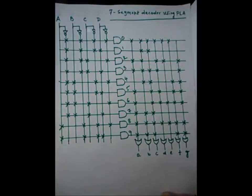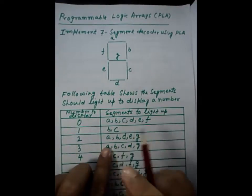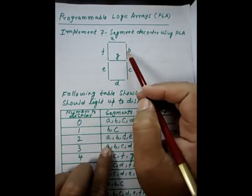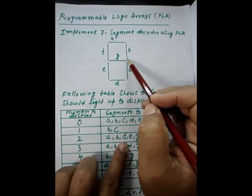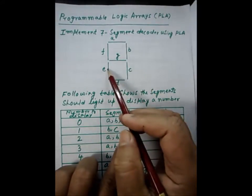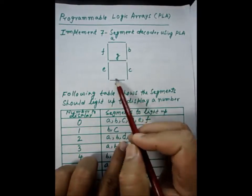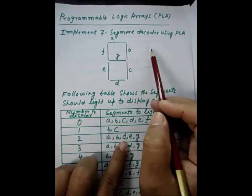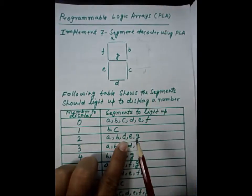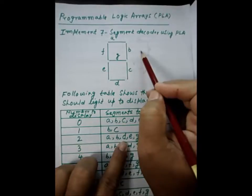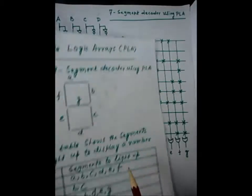From the table, to display the digit two, the segments A, B, D, E, and G must glow. So these five segments — A, B, D, E, and G — should display.